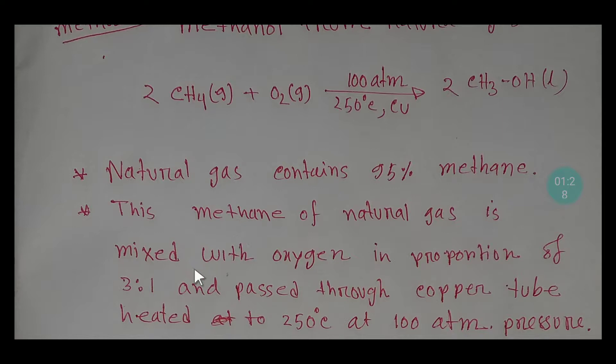The methane of the natural gas is mixed with oxygen in proportion of 3:1 and passed through copper tube heated to 250 degree Celsius at 100 atmosphere atmospheric pressure.